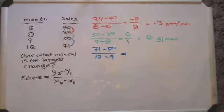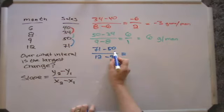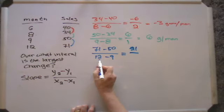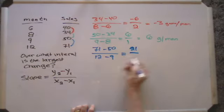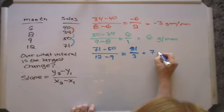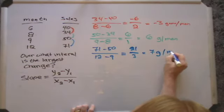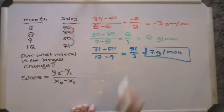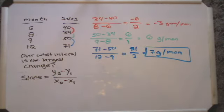Now let's see what we get. 71 minus 50 puts me at 21. And here I've got the 12 minus 9, that's a difference of 3. And so that's a rate of seven game systems per month. Now since that's the biggest slope, that would be my greatest rate of change.